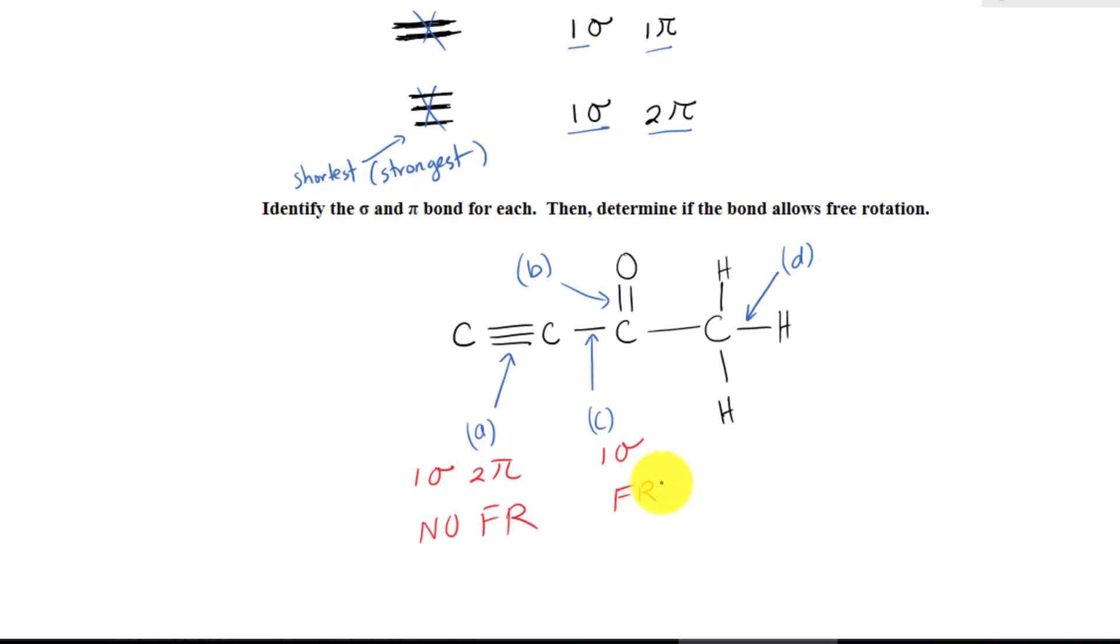What about B? It's a double bond. So it has one sigma bond and one pi bond. Does it allow free rotation? No. Therefore, we have no free rotation. You can look at the pattern. You realize that anything that has a pi bond to it doesn't allow free rotation.